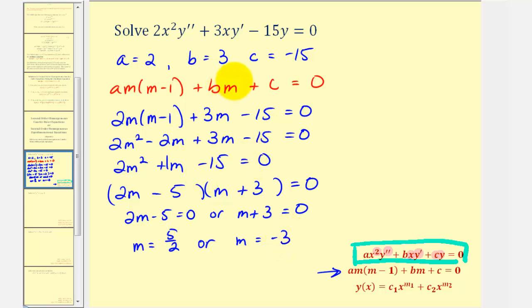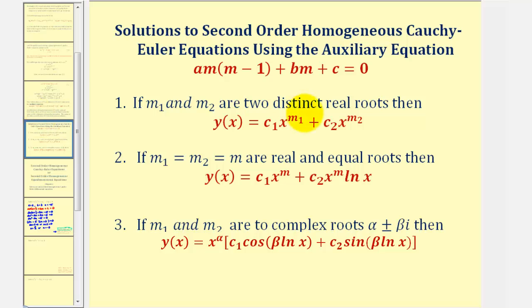Because the auxiliary equation has two distinct real roots, the form of the general solution will be given by y of x. To review, based upon the nature of the roots, it will affect the form of the general solution. There are three possible outcomes: if we have two distinct real roots, this will be the form of the general solution; if we have two real equal roots, this will be the form of the general solution.